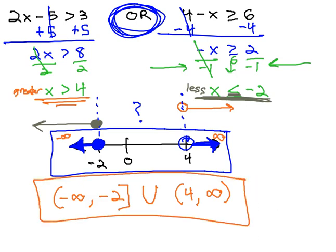This becomes our final answer in interval notation. This tells us that any value between negative infinity and negative 2, including negative 2, or any value from 4 to infinity, will make one or both of the original inequalities true.